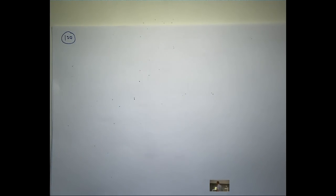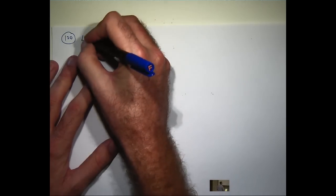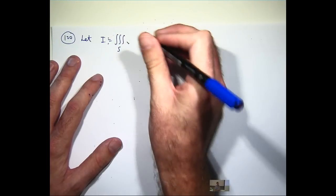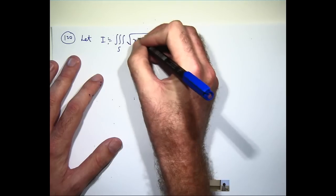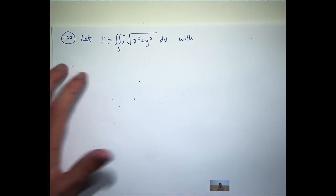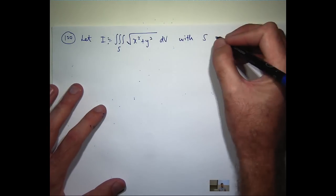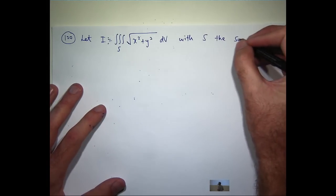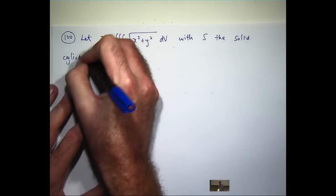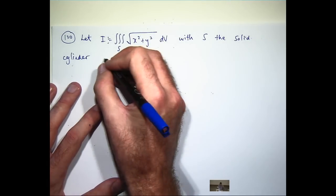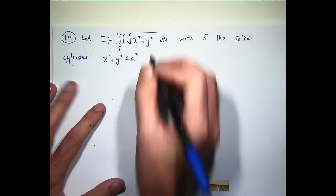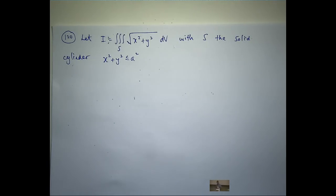Okay, so let I be the following triple integral. With the region of integration s, now I'm just going to write this with a less than or equal to sign here. It's still the same region.